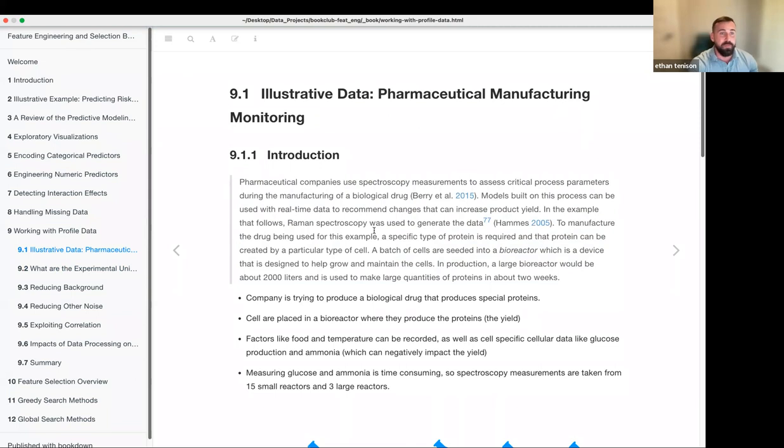Basically, it was taking data from a pharmaceutical company that was trying to produce a biological drug. And they're interested in these specific, very special proteins. And they create these proteins by putting cells in a bioreactor. And the protein is essentially the yield of that reactor. And things that increase the yield are food, temperature, those things are recorded, as well as cellular data, such as glucose and the production of ammonia, which actually decreases the yield.